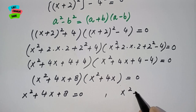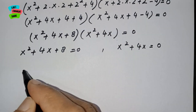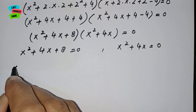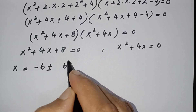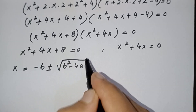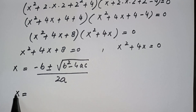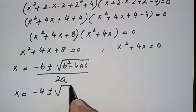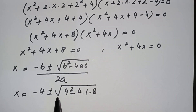Both are quadratic equations. We use the quadratic formula: x = [−b ± √(b² − 4ac)] / 2a. For x² + 4x + 8 = 0, we plug in a = 1, b = 4, c = 8: x = [−4 ± √(4² − 4·1·8)] / (2·1).